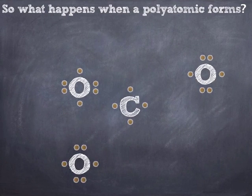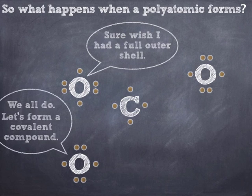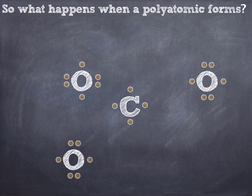What I thought I'd do is show you a little story about how these things form. Now some of this stuff might be a little advanced based on where you might be in terms of curriculum. But the atoms want to get together and form full outer shells. Carbon starts with four, each of the oxygens start with six, and since they're all non-metals, they'll try to share their way to a full outer shell.